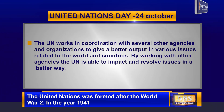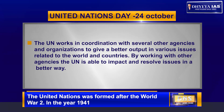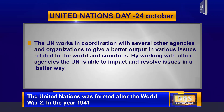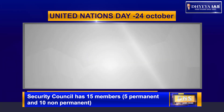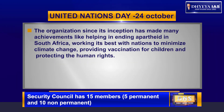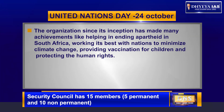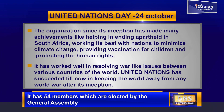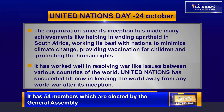The UN works in coordination with several other agencies and organizations to better address various issues related to the world and its countries. By working with other agencies, the UN is able to impact and resolve issues more effectively. Since its inception, the organization has made many achievements, like helping end apartheid in South Africa, working with nations to minimize climate change, providing vaccination for children, and protecting human rights. It has worked well in resolving war-like issues between various countries, and has succeeded in keeping the world away from any world war since its founding.